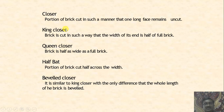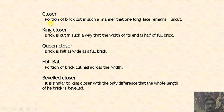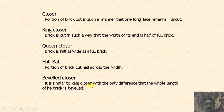Sometimes bricks cannot be used as-is in construction; they must be cut into a specific shape. A closer is a portion of brick cut such that one long face remains uncut. A king closer is cut so that the width of its end is half of the full brick. A queen closer is half as wide as a full brick — a half-bed portion cut across the width. A beveled closer is similar to the king closer, except the whole length of the brick is beveled.